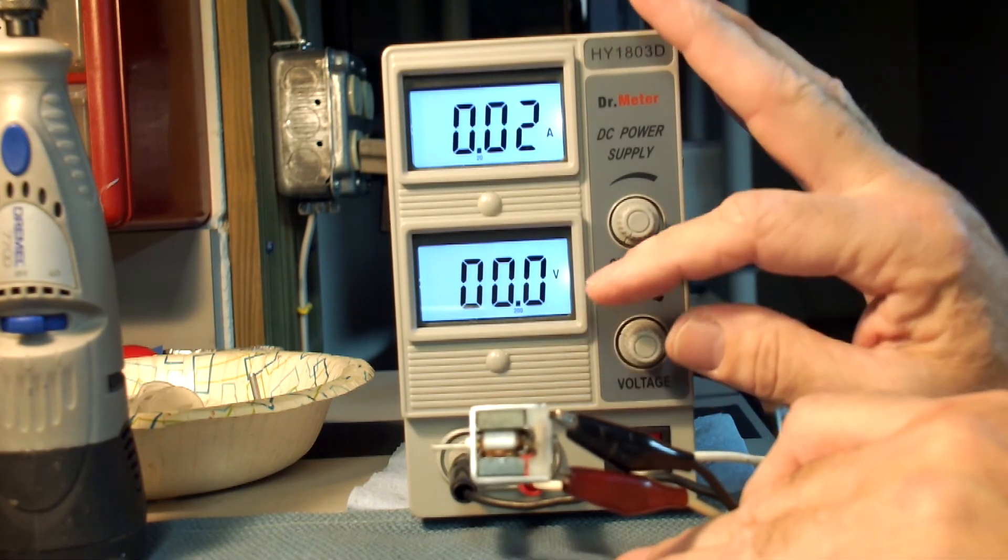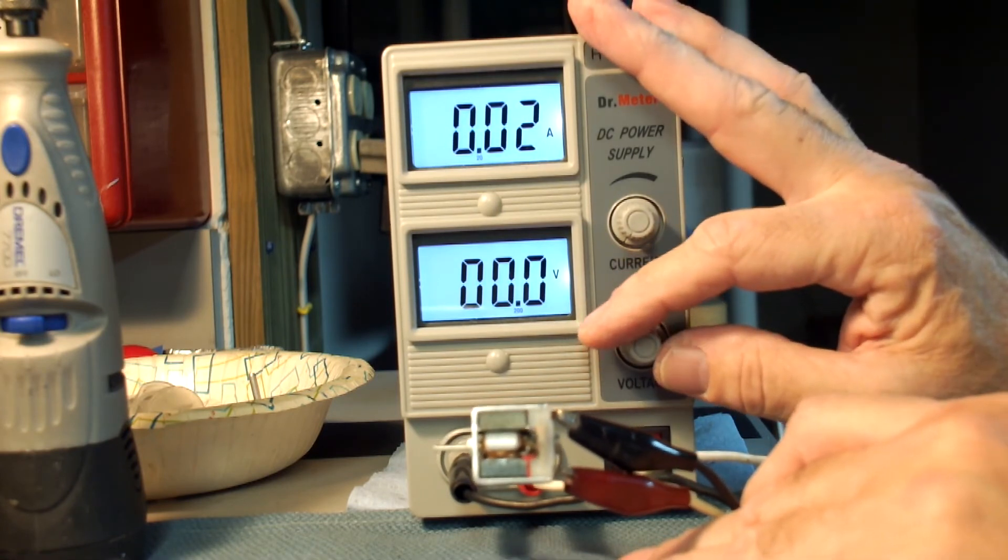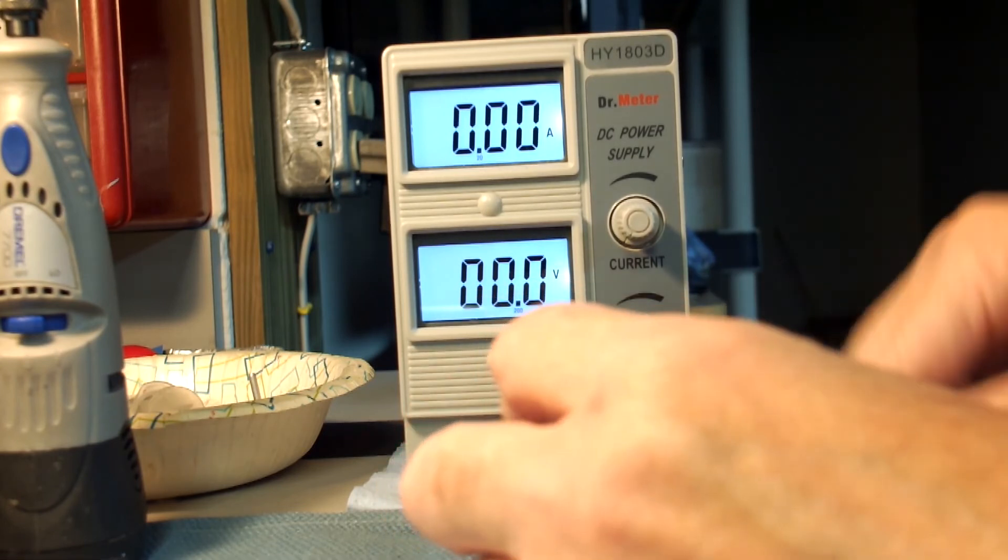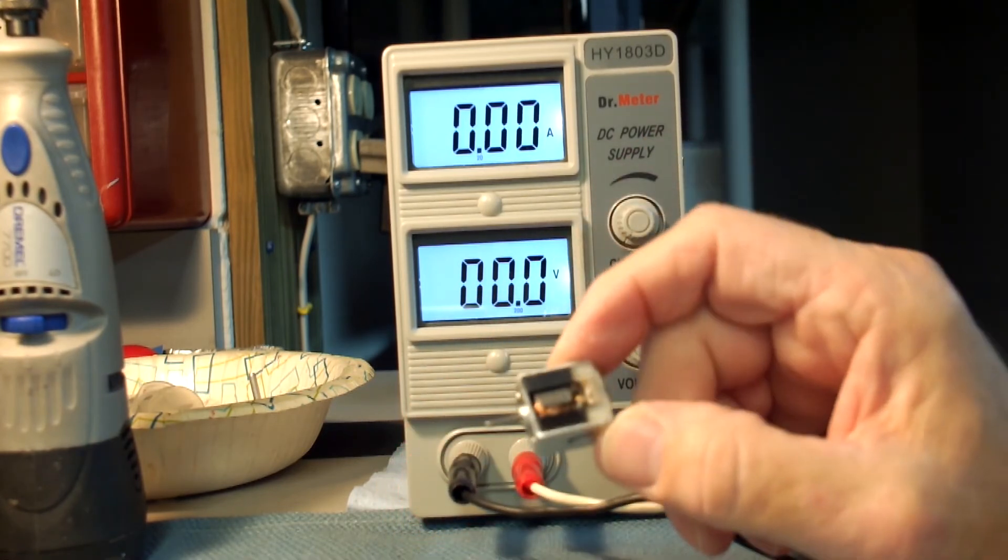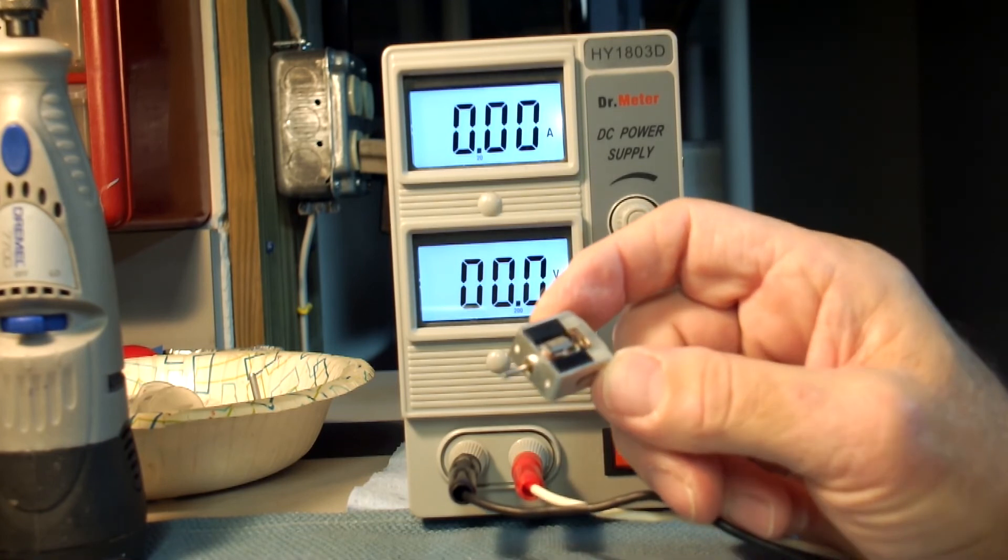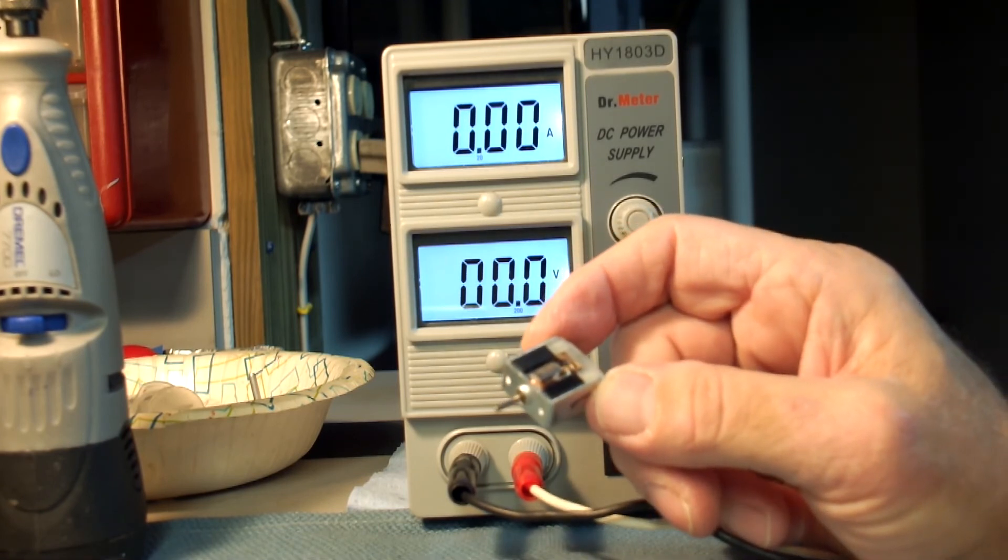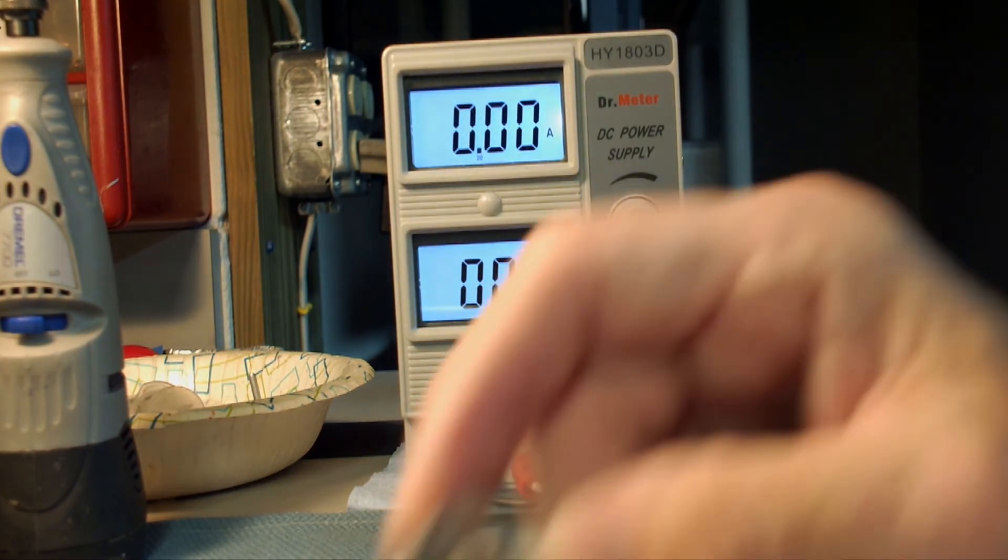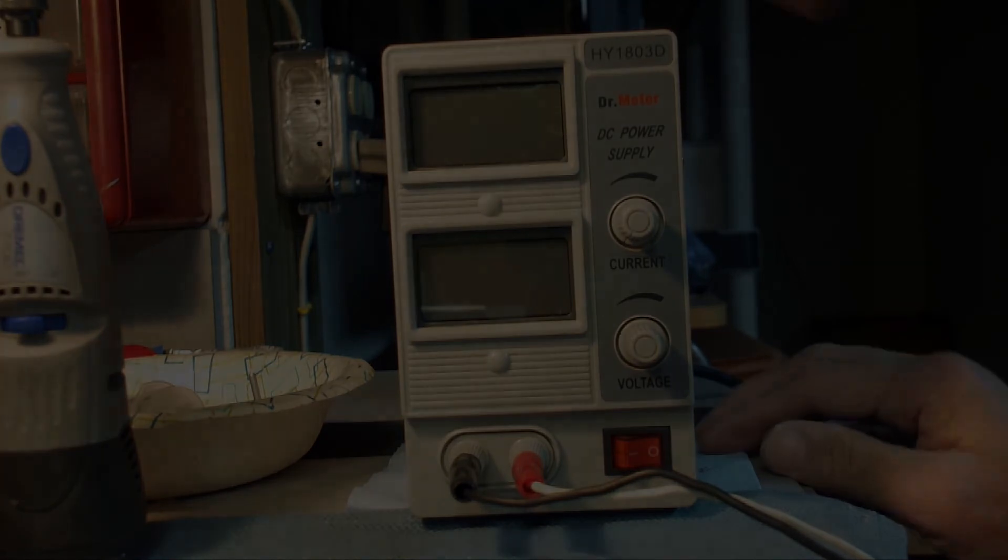There it went. There it went. Alright, so you can see right there the amp draw is so high in these things that it just taxes the commutator to where the heat is so great it just melts. There it goes. Thank you.